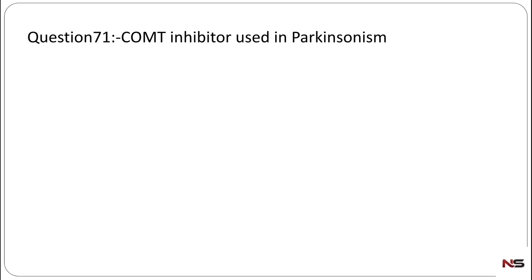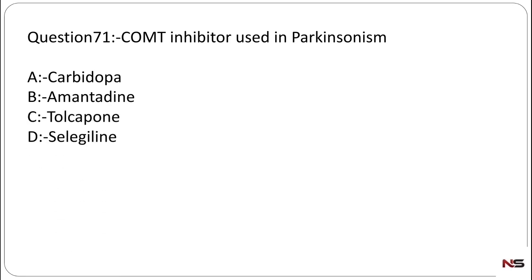Which is the COMT inhibitor used in Parkinsonism? We can answer this question if you know the classification of anti-parkinsonism drugs. Option A: carbidopa, Option B: amantadine, Option C: tolcapone, Option D: selegiline. The correct answer is Option C, tolcapone.